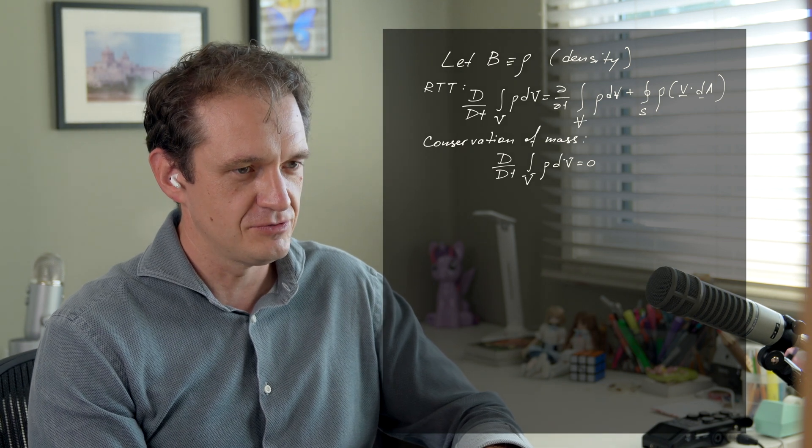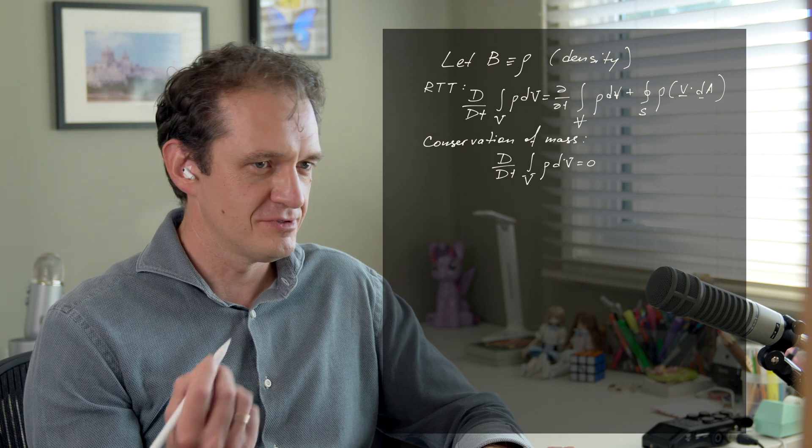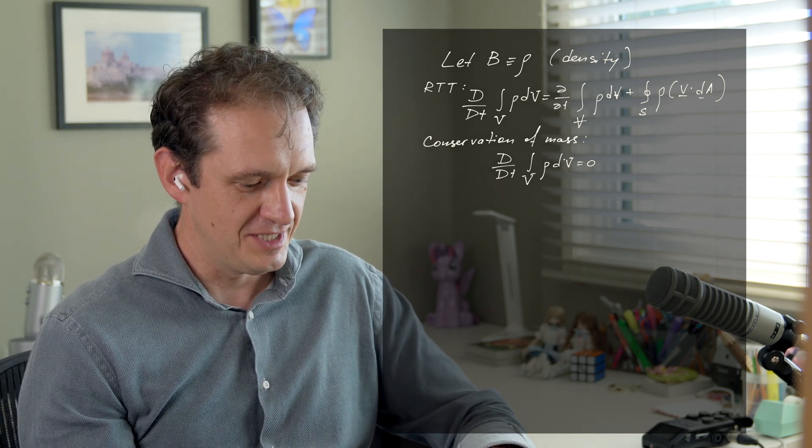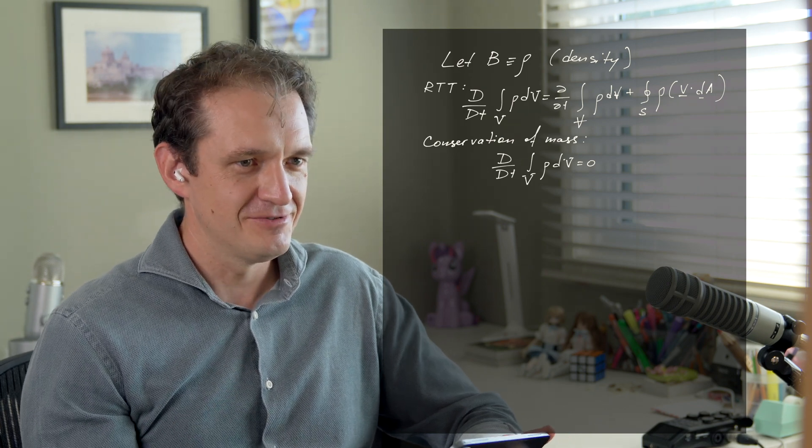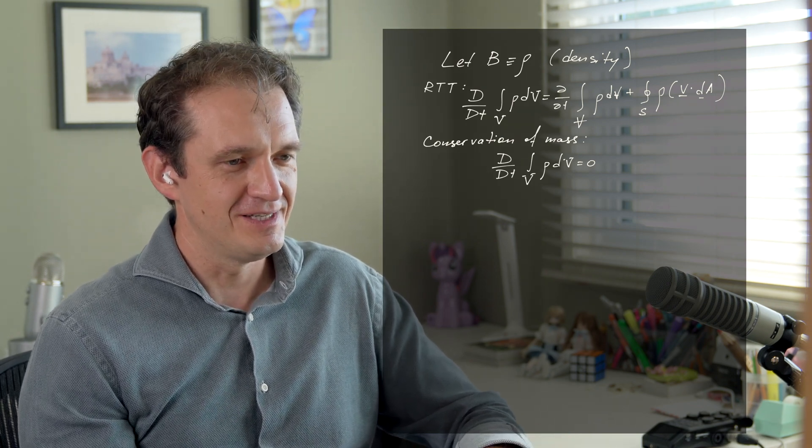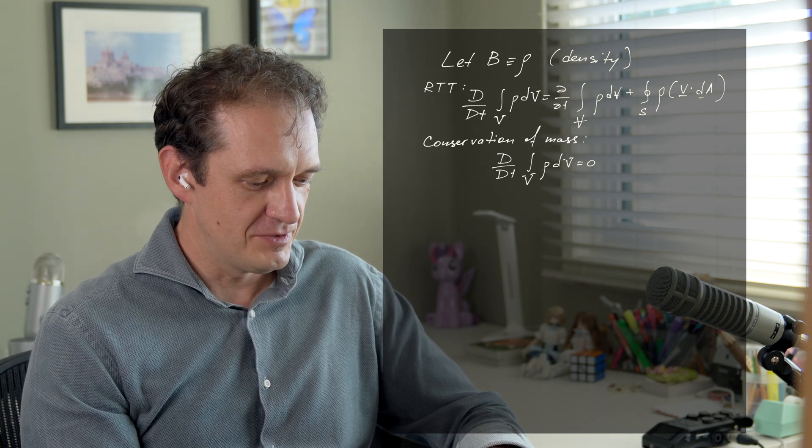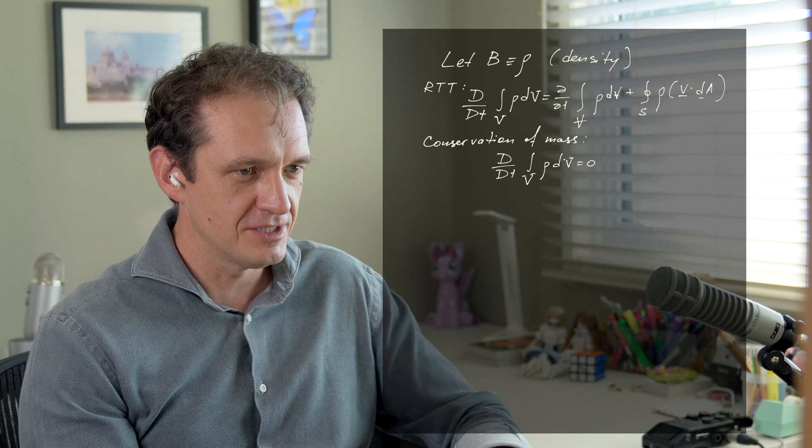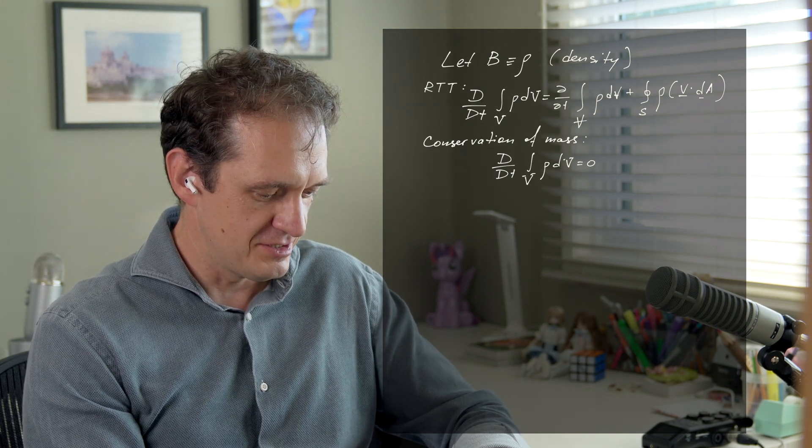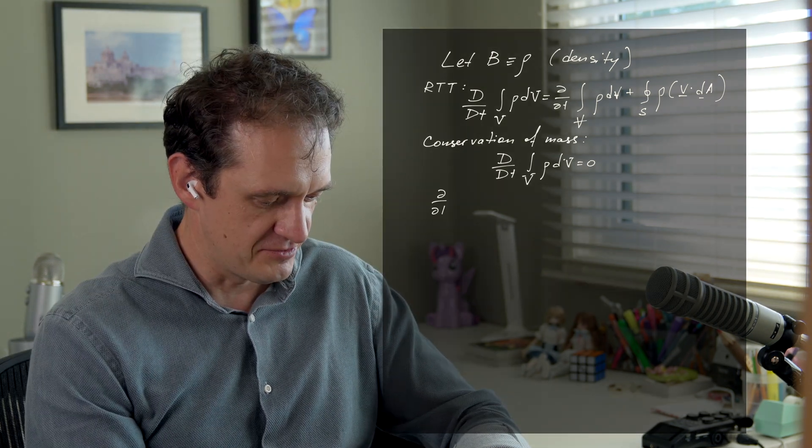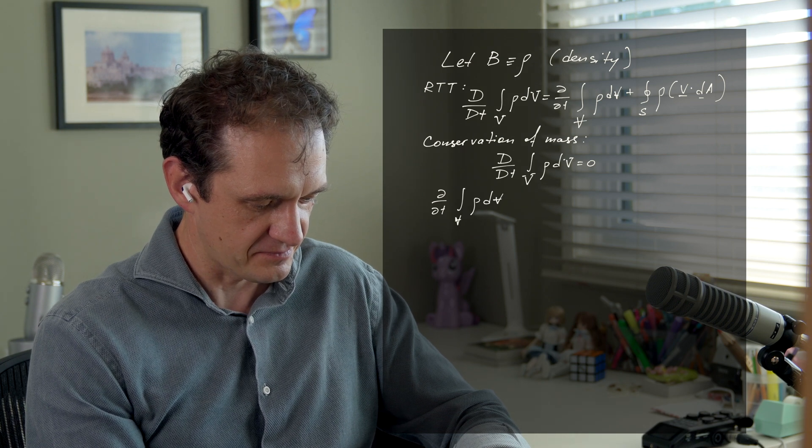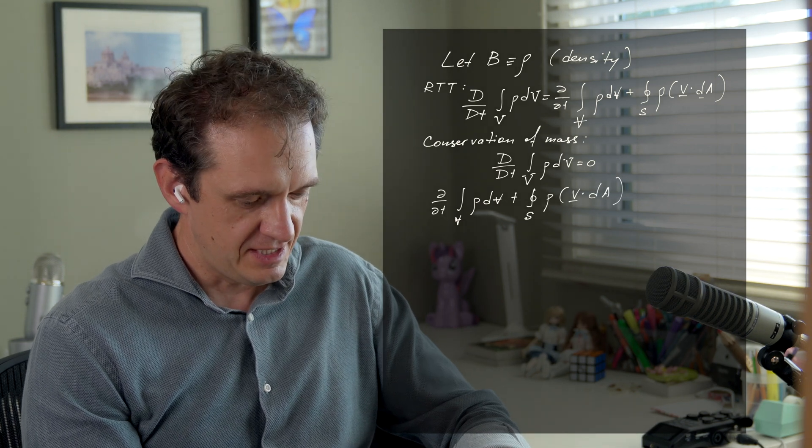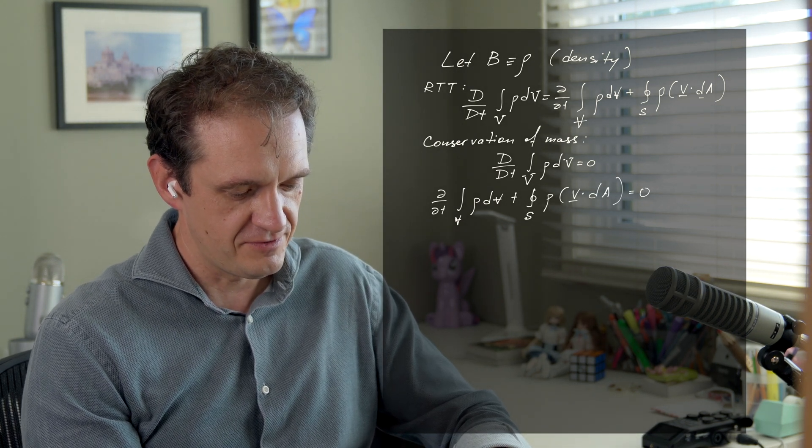is equal to zero. We are assuming that there is no nuclear reaction, so we're not converting mass to energy directly. But this is fine for the scope of this course. So if this is what we want to express, that means that the term on the left is equal to zero. We can just rewrite the equation above: the first term is rate of change of mass inside the control volume, and the second term is the net flux of mass through the control surface.